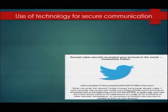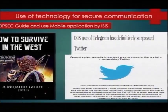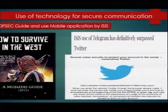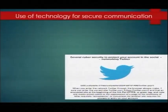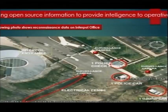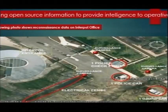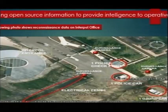ISIS has published a document on how to use different kinds of communication on social media and what precautions to be taken. There is also the use of Google Maps to show exactly the places which need to be attacked or the routes which need to be taken. We have seen this happen in our own Pathankot attack case, and I will show a slide of that in due course.